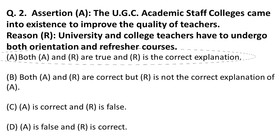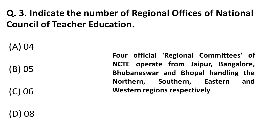The next question asks: indicate the number of regional offices of the National Council of Teacher Education. The correct answer is four. The four offices are located in Jaipur, Bangalore, Bhubaneswar, and Bhopal, and they deal with the northern, southern, eastern, and western regions respectively. Remember: NCTE has four regional offices.